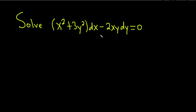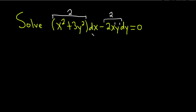This differential equation is called homogeneous because these powers are the same. Here you have a 2, here you have a 2, and then here you have a 1 and a 1, and 1 plus 1 is 2. So we say that this function is homogeneous of degree 2, and the other function is also homogeneous of degree 2. Whenever they're both homogeneous of the same degree, we say it's a homogeneous differential equation.